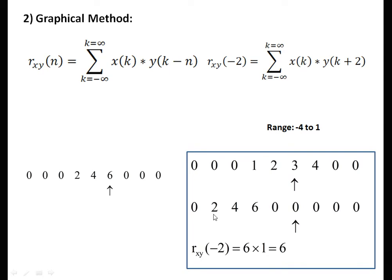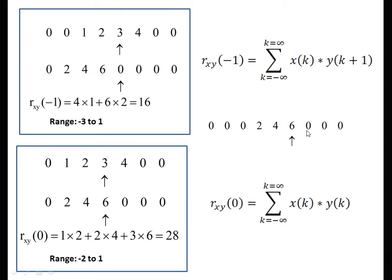Next, x is fixed and only y moves. For y(k plus 1), shift the arrow to the right by 1 unit. The signal becomes {0, 6, 4, 2}. Corresponding element multiplication gives the next term, and here the range is minus 3 to 1. For n = 0, there is no shifting — original signal: x = {1, 2, 3, 4} and y = {2, 4, 6}. The range here is from minus 2 to 1.